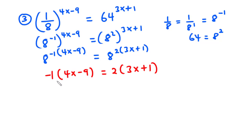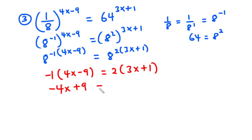Now negative 1 times 4 is negative 4, so you have negative 4x. And then negative 1 times negative 9 is plus 9. Now 2 times 3x is 6x and then 2 times 1 is equal to 2.